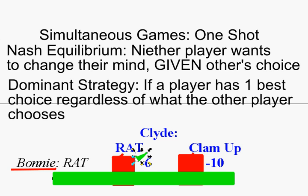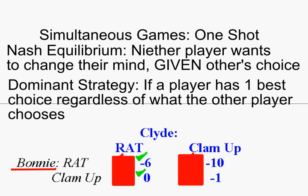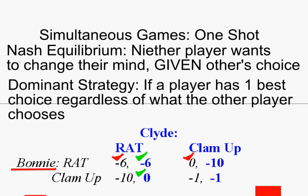Now let's switch. Clyde, what is your best choice if you think Bonnie clams up, putting us in the bottom row? Is it to rat and get zero years in jail, or clam up and spend one year in jail? Clyde says his best choice is to rat again — if he thinks Bonnie is going to clam up, he should also rat. So Clyde has two check marks, telling us that Clyde wants to rat when Bonnie rats and also when Bonnie clams up. We also learned from the red check marks that Bonnie always wants to rat no matter what she thinks Clyde is going to do.